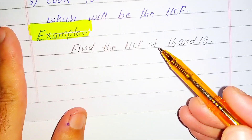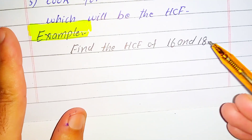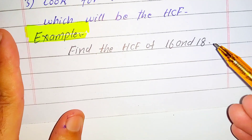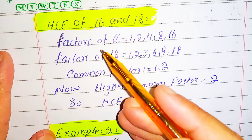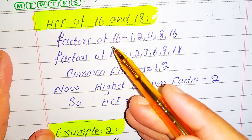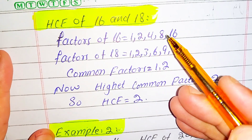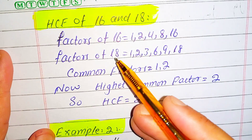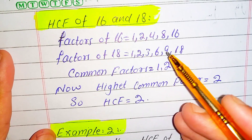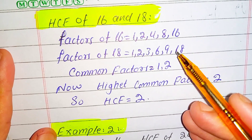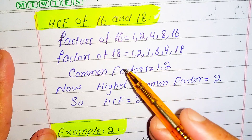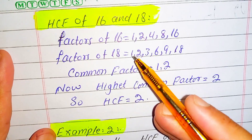For example, find HCF of 16 and 18. It is very easy to find the HCF of 16 and 18 within a few seconds. First, we find the factors of 16, which are 1, 2, 4, 8, and 16. The factors of 18 are 1, 2, 3, 6, 9, and 18. Now we find the common factors of 16 and 18.